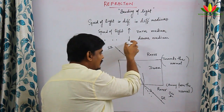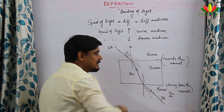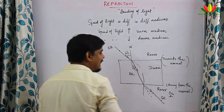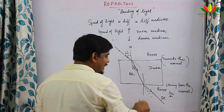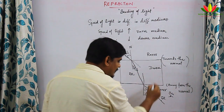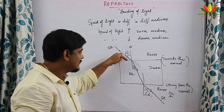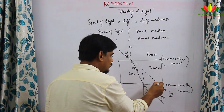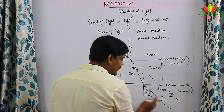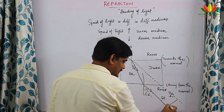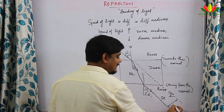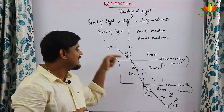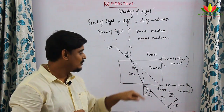The angle made by the incident ray with the normal is the angle of incidence. The angle made by the refracted ray with the normal is the angle of refraction (r) — not reflection. The angle made by the emergent ray with the normal is the angle of emergence.